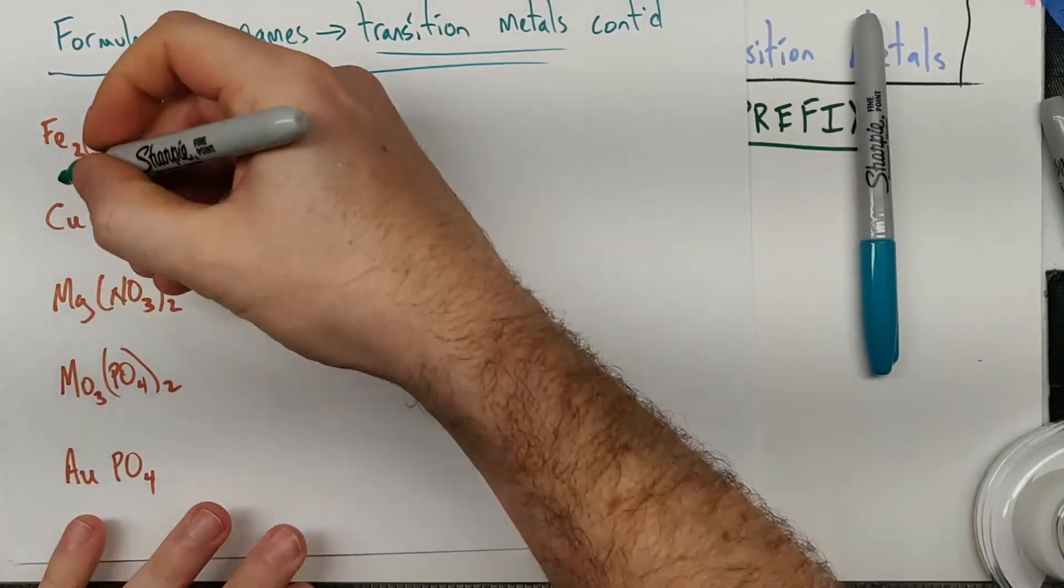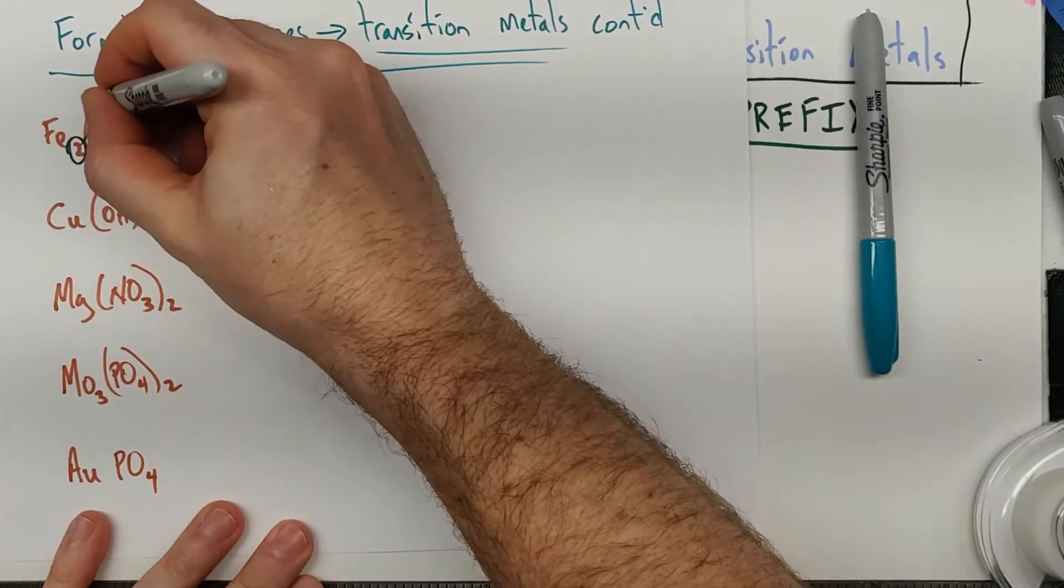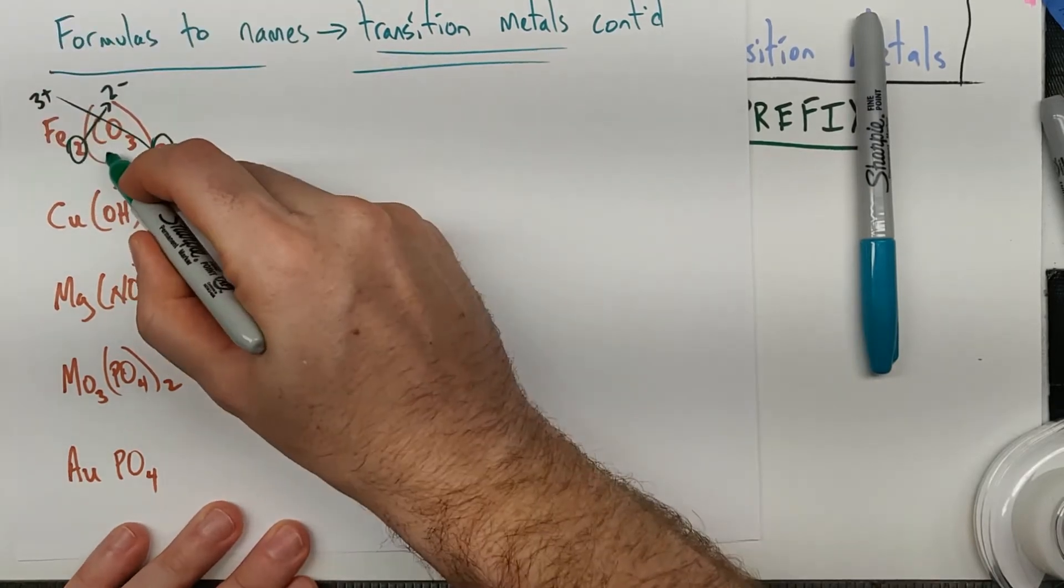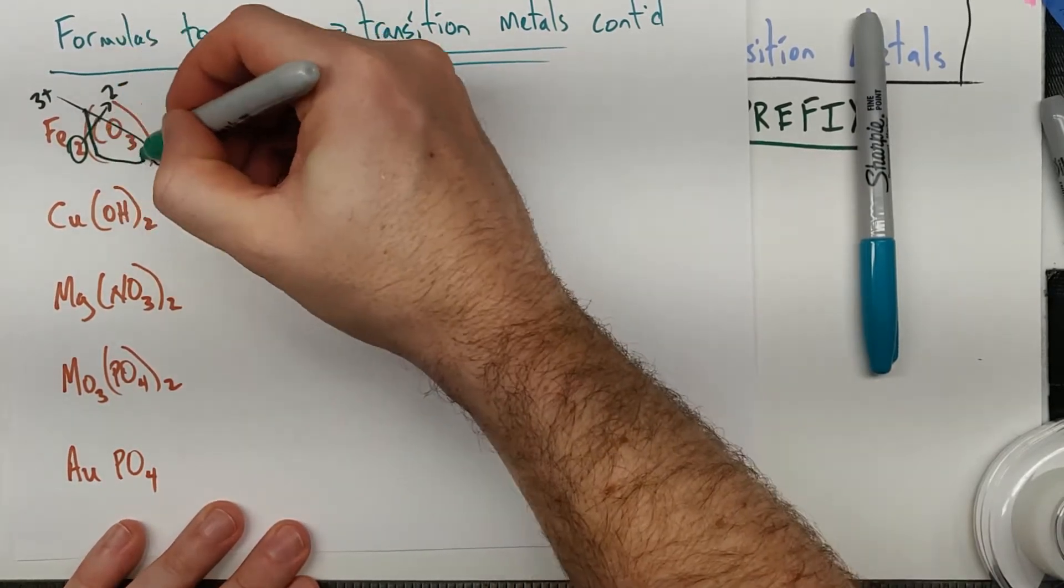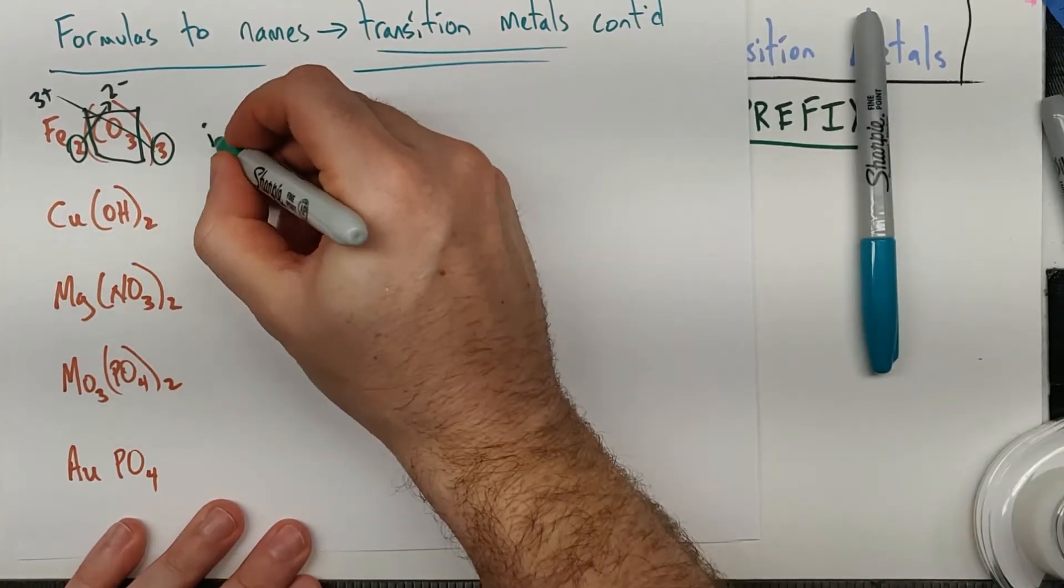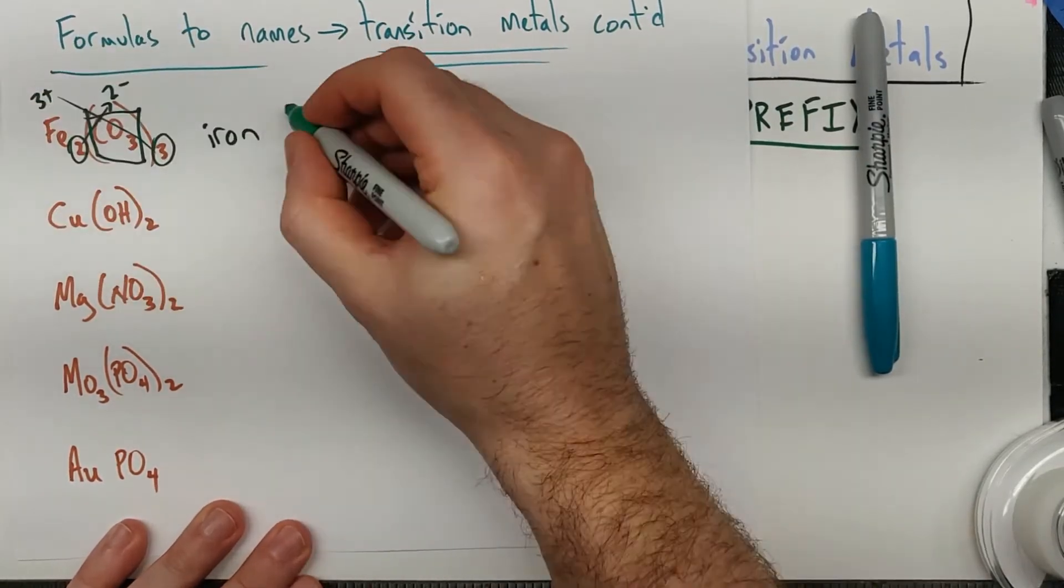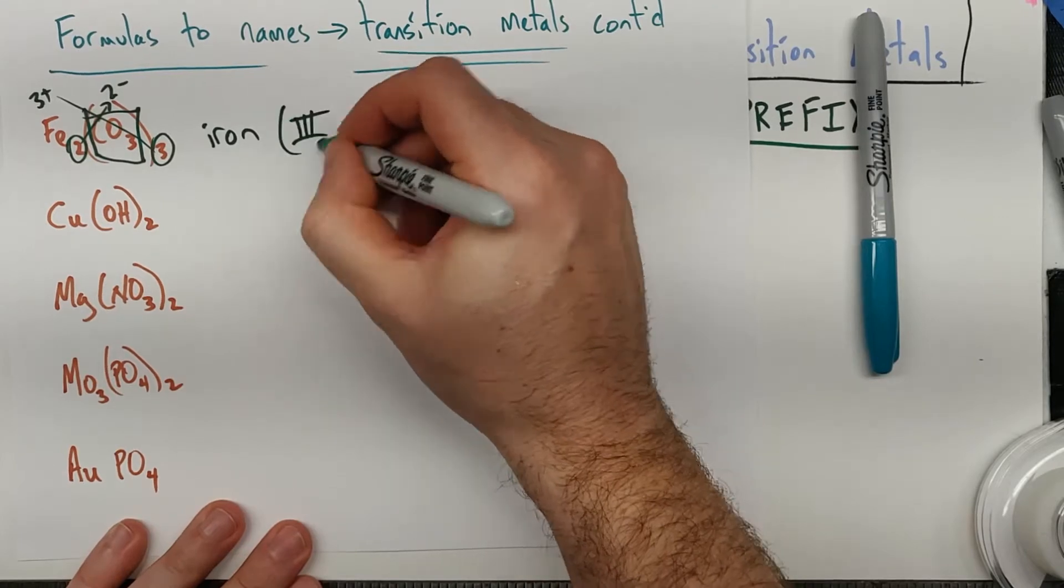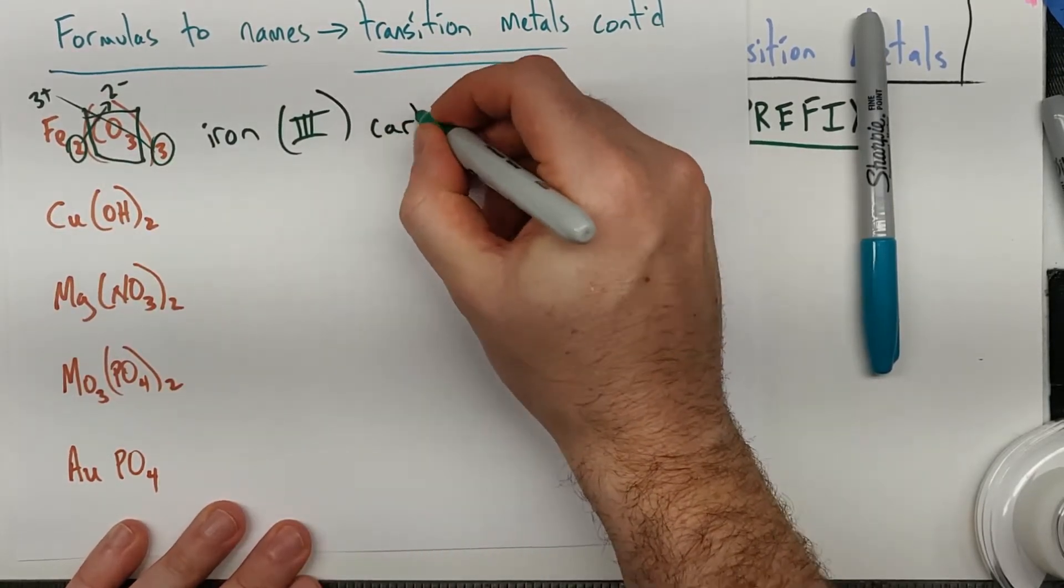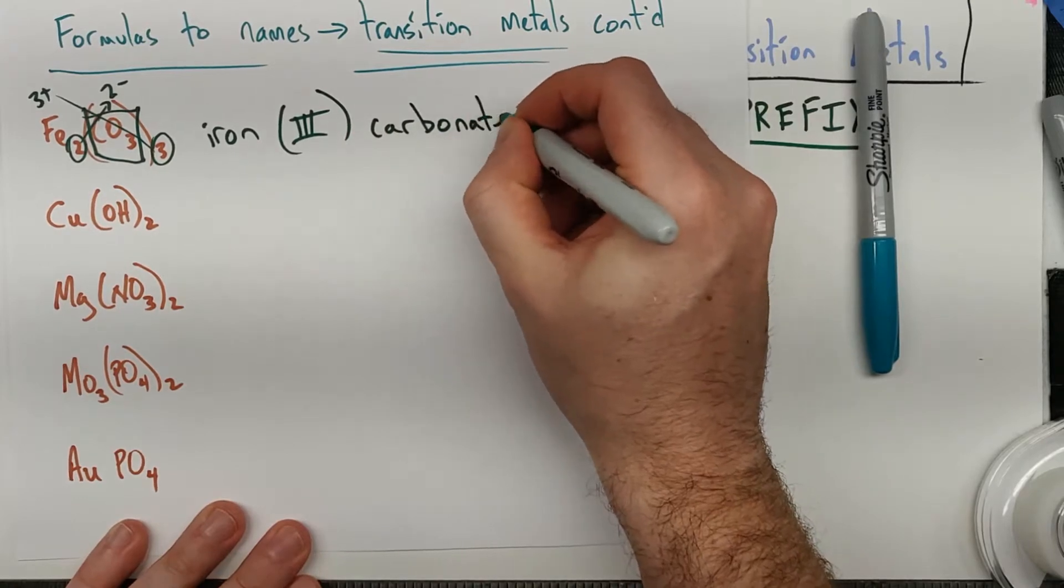And so let's see if that happens when we uncrisscross. So I'm going to take this 2 and then this 3. And I expect carbonate to be a 2 minus. This thing here, I expect to be a 2 minus. So that's okay. We can name it. Iron, I'm going to take that number right there and make it as a Roman numeral. This 3, the positive number there, carbonate.